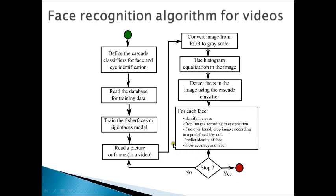And then preprocessing starts. In the preprocessing actions, the first thing we do is convert the image from the RGB color space to grayscale and then we use histogram equalization. After that, we detect the faces.